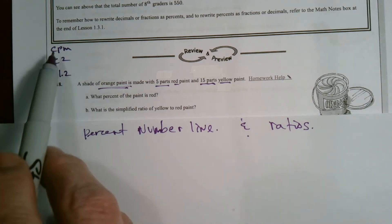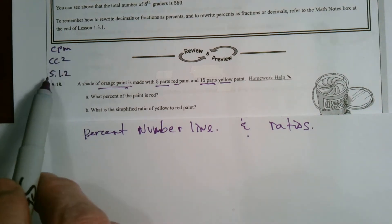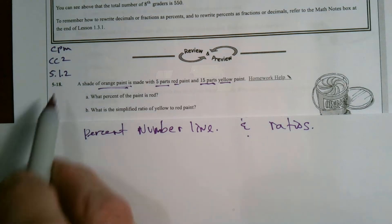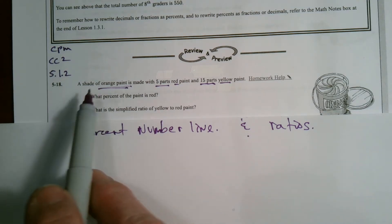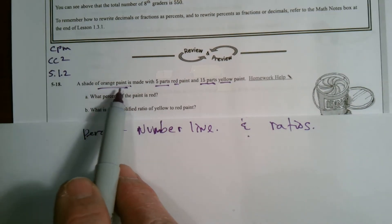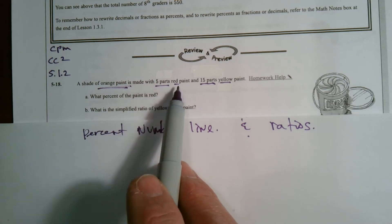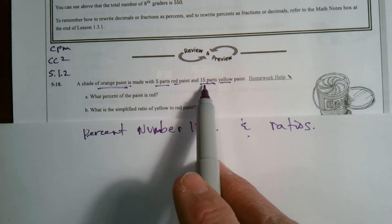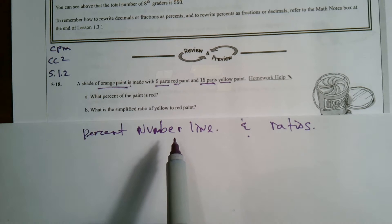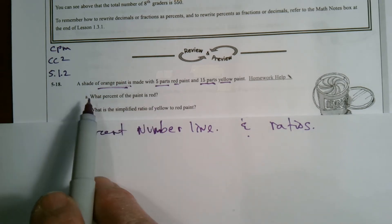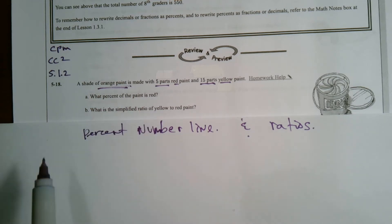So by the way, this is CPM course two section 5.1.2 number 5-18. I have a shade of orange paint is made with five parts red paint and 15 parts yellow paint. What percent of the paint is red?